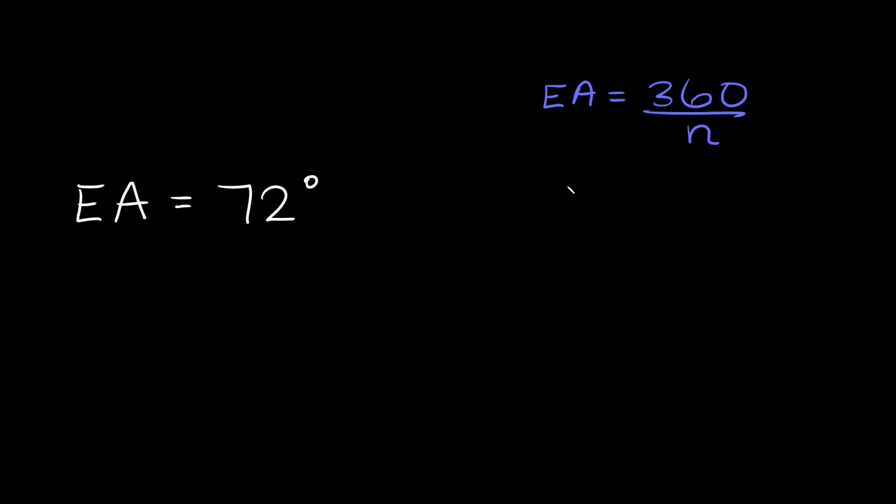So then here we're going to say that 72 is equal to 360 divided by n. Now here to get the n into the numerator we can just multiply both sides by n. So then these cancel out and then here we're left with 72 times n is equal to 360.